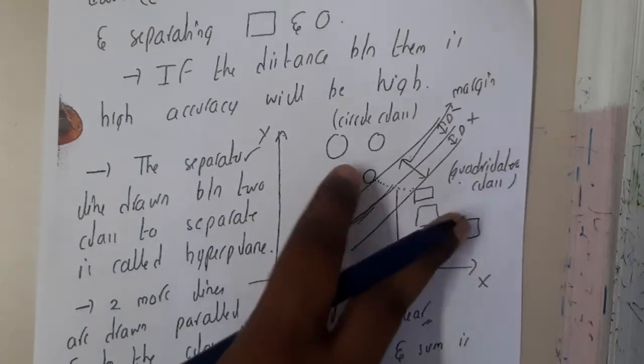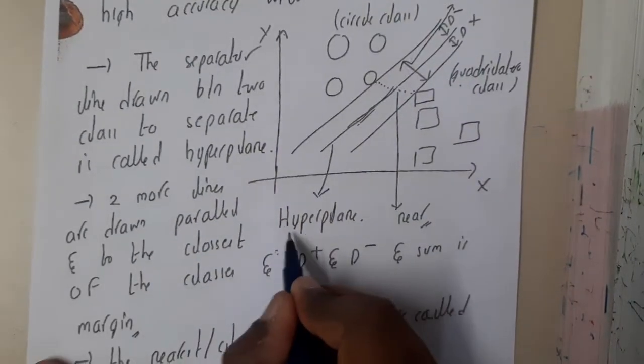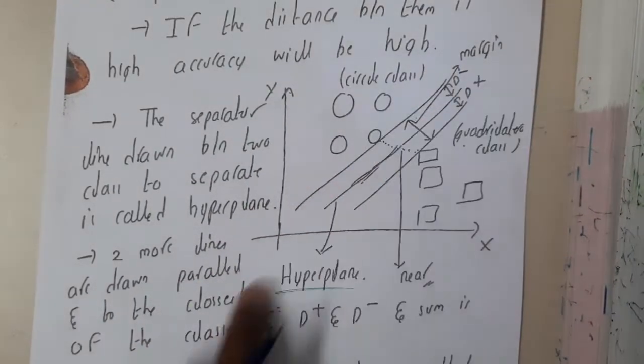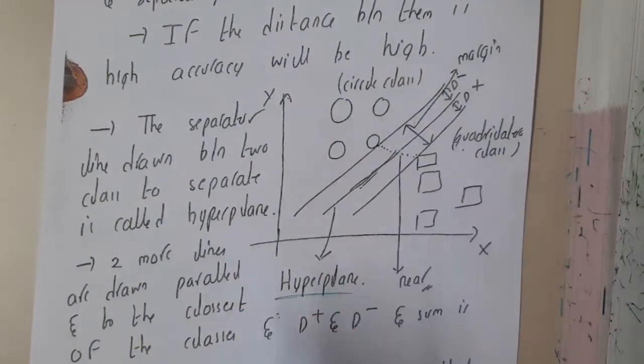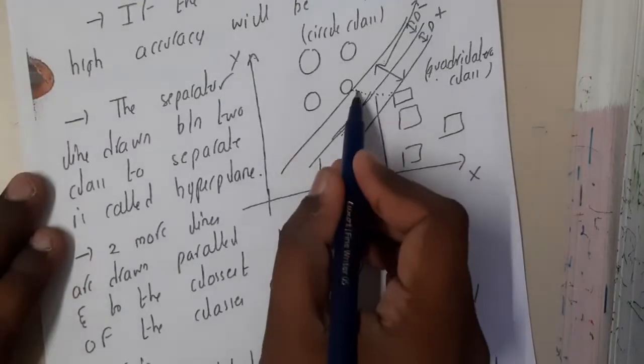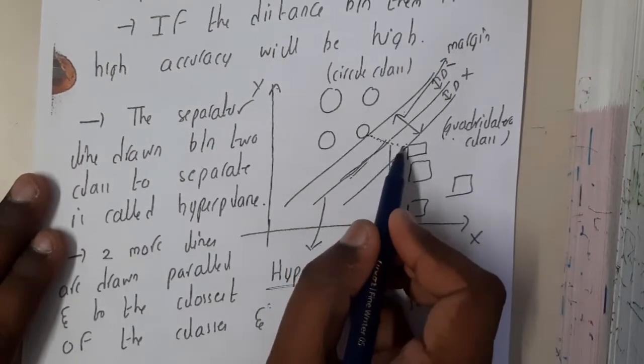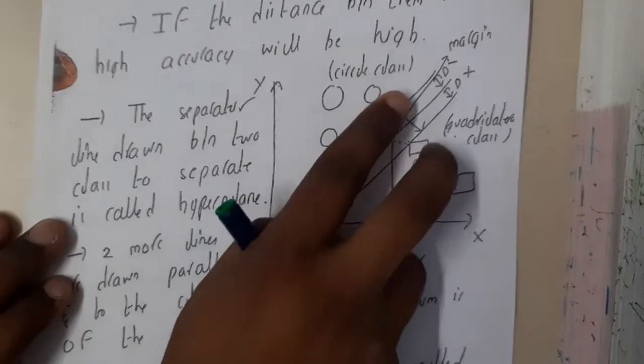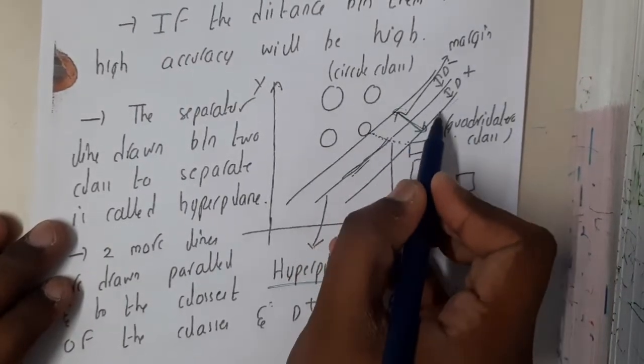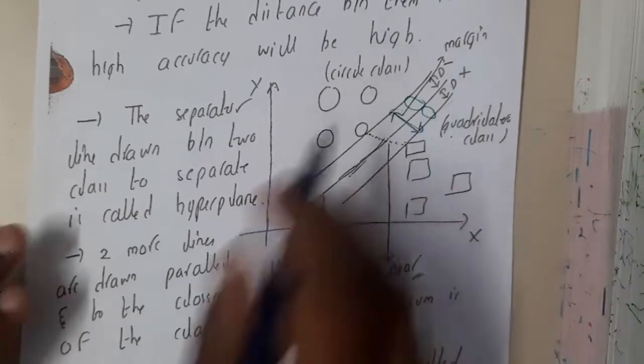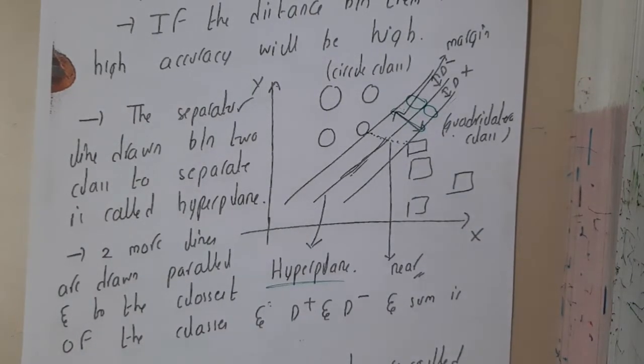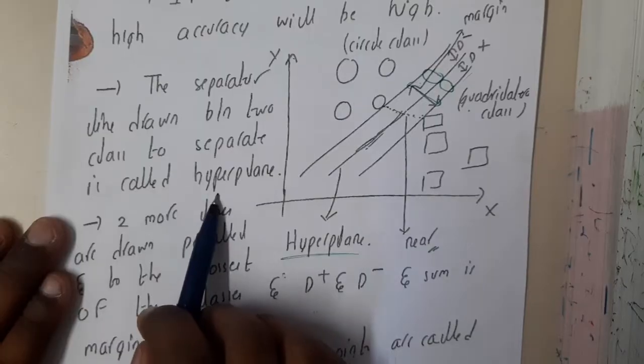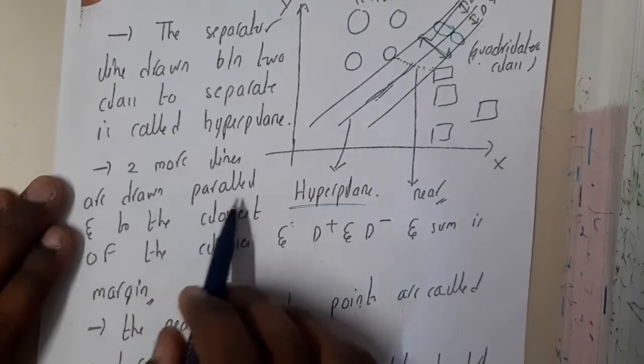Now let us go through some terminology. Basically, these two objects will be divided by a single line, and that is nothing but hyperplane. And for this hyperplane, you will be drawing two parallel lines which are almost touching to the first items, like shortest distance item. So basically, these two are having the minimum distance. Between those distances, we will be touching these lines and these lines are called as margins. This length is called as margin, and this side is D plus and this side is D minus. D plus plus D minus equals total length, that is margin. The separator line between the two classes is called hyperplane. Two more lines are drawn parallel to the closest of the classes: D plus and D minus, and the sum of them is nothing but margin.